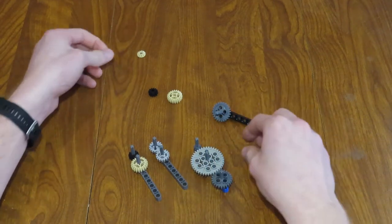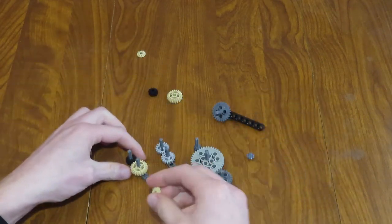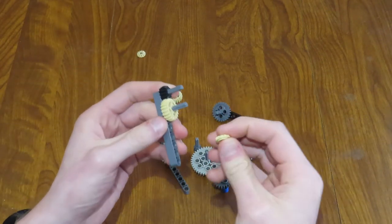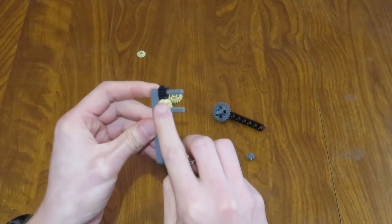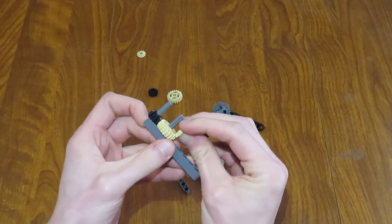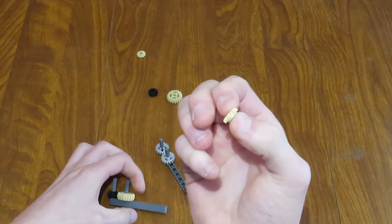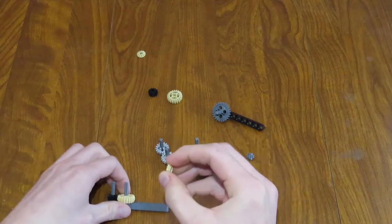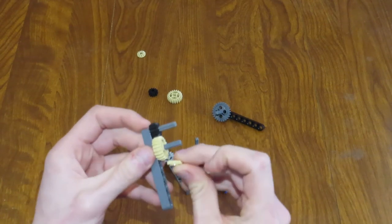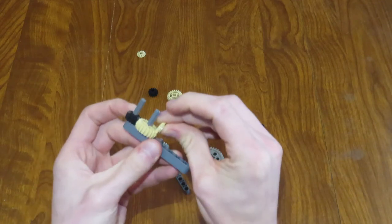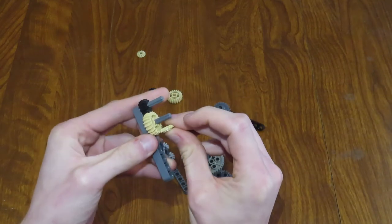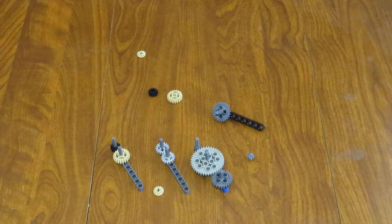In the next video, we'll look at how to use these single bevel gears with a double bevel gear because they can, these single bevel gears are mainly used to change the angle on gears. So, this would be a 90 degree angle turn. We'll look at those in the next video. Thanks for watching.